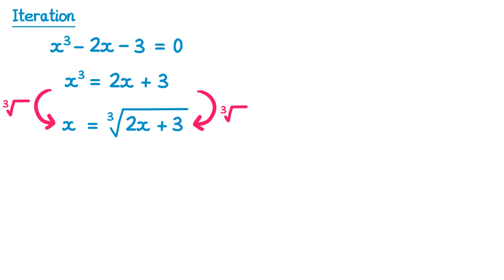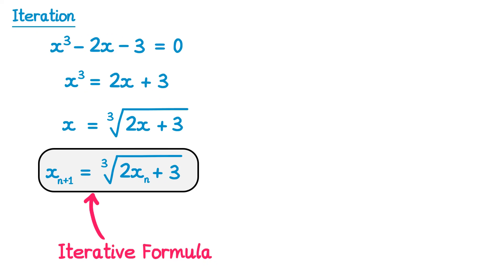This might seem like quite an unusual approach, but it will help us out. The next thing to do is take the x on the left hand side and write it with a subscript n plus 1, and any x's on the right hand side become x with a subscript n. This is now known as an iterative formula. Often the iterative formula is given to you in the question, but you may be asked to show that it does work, like I have done in this question.